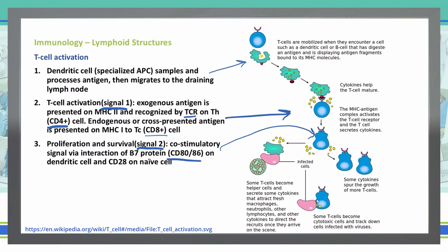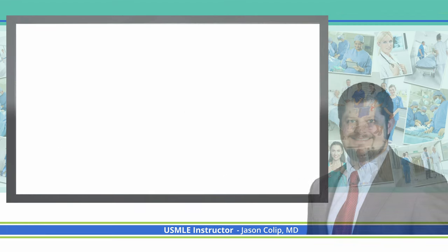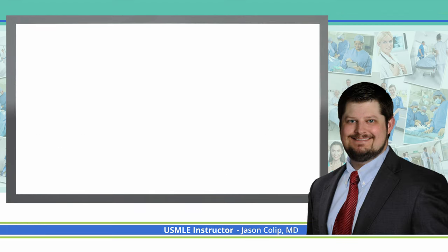Finally, the last process in T cell activation: activated T helper cells produce cytokines, and CD8 T cells are able to recognize and kill virus-infected cells, as shown in the diagram.